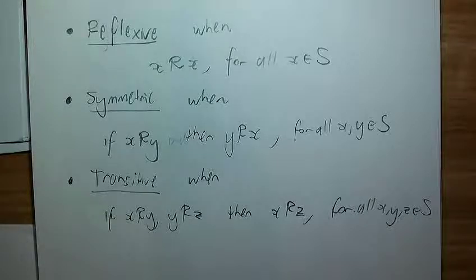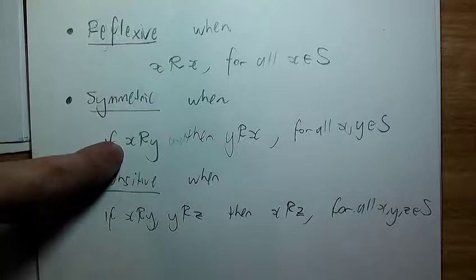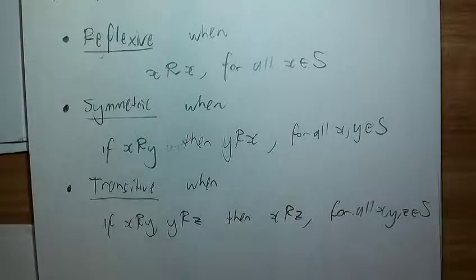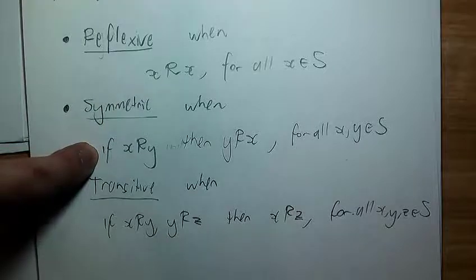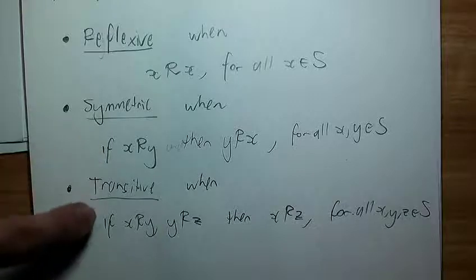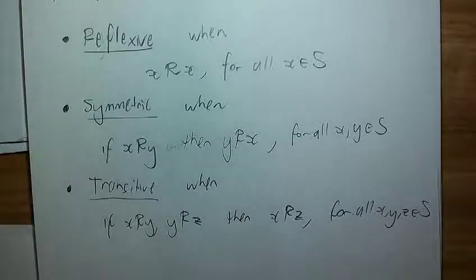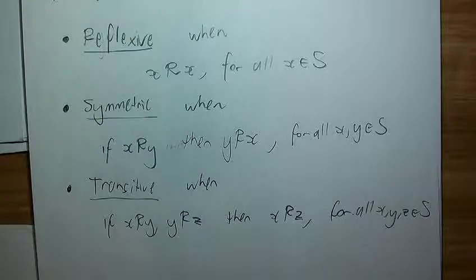These are the three properties that make something an equivalence relation. Notice that reflexivity involves a single object x, symmetry involves two objects x and y, and transitivity involves three objects x, y, and z — that's why they're listed in this order. Reflexivity has no 'if'; symmetry has one 'if'; transitivity has two 'ifs'. They become progressively harder to check.